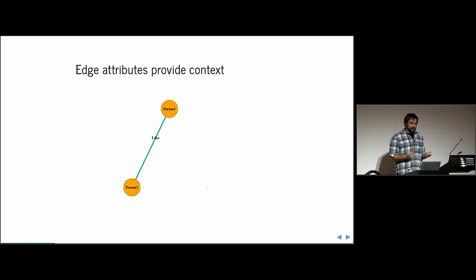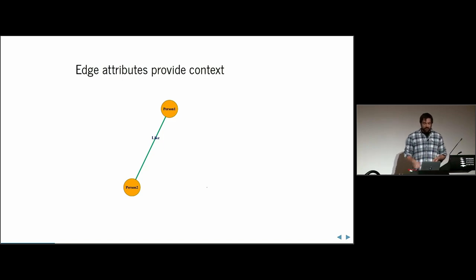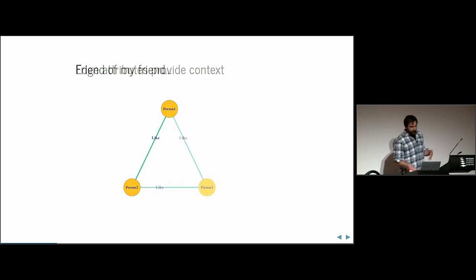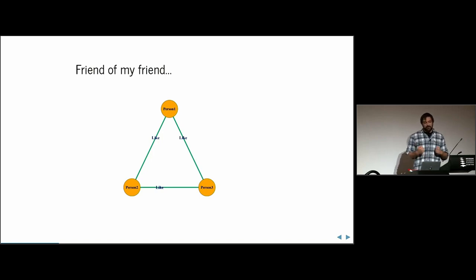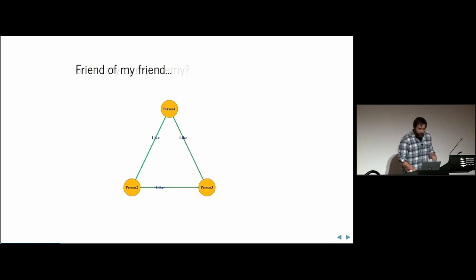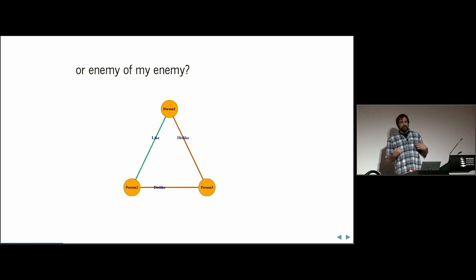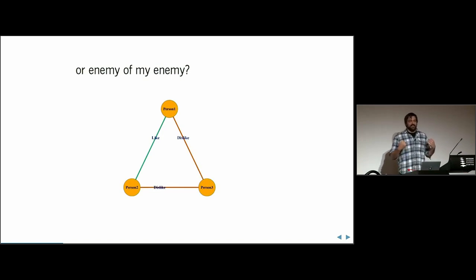Here is a dyadic relationship where just two people are involved — person one and person two, and they like each other. But if we add a third person, there's the idea that a friend of my friend is my friend. So we can see these are two friends part of a friend group, or the enemy of my enemy is my friend — these people are friends simply because they hate the same person.